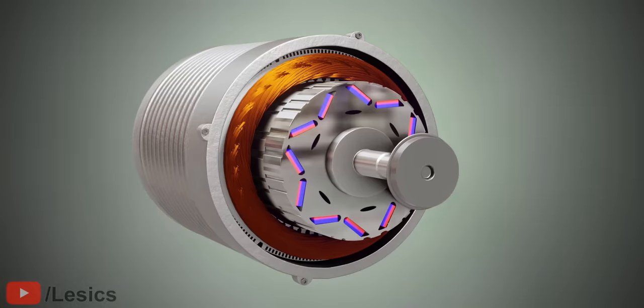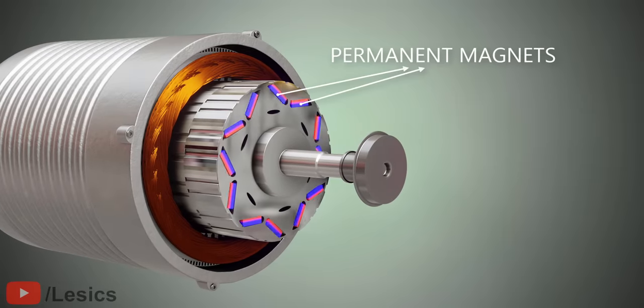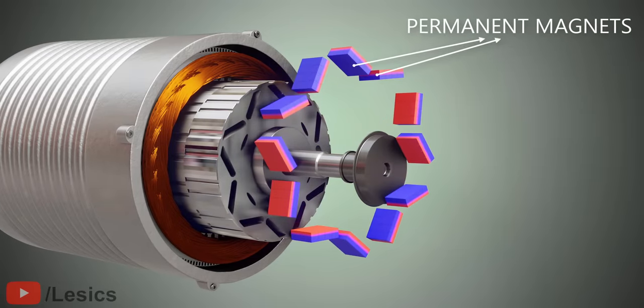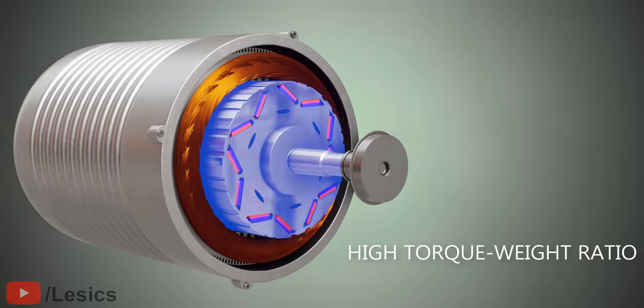The Ola scooter runs on an internal permanent magnet IPM motor. These electric motors have permanent magnets embedded deep inside their iron rotors. The IPM motor is a great choice as it has high torque-to-weight ratios.